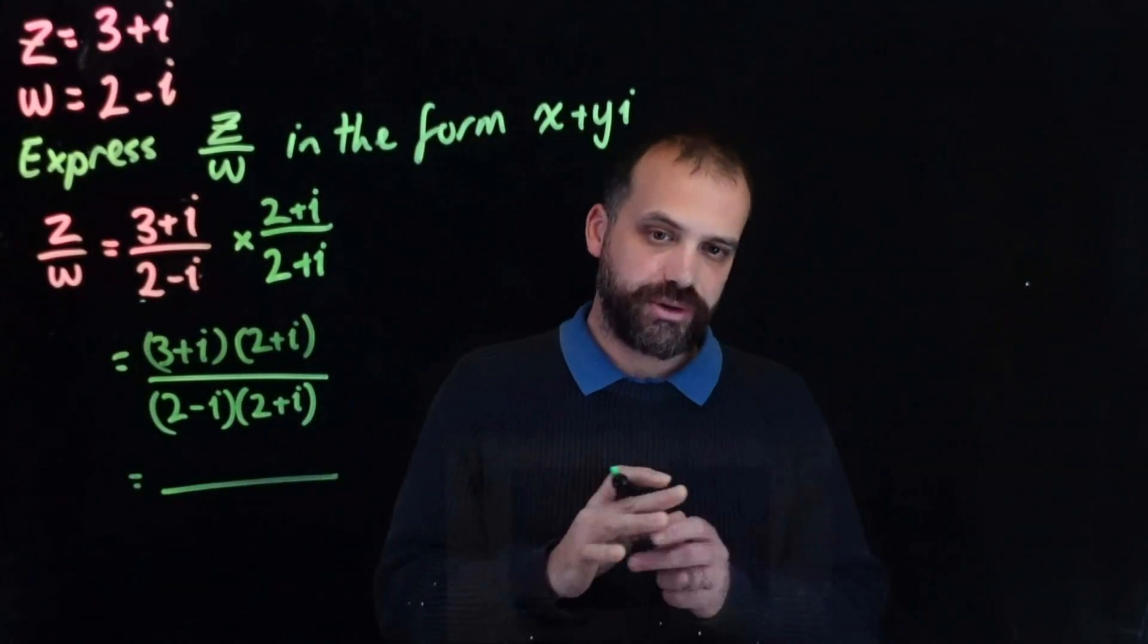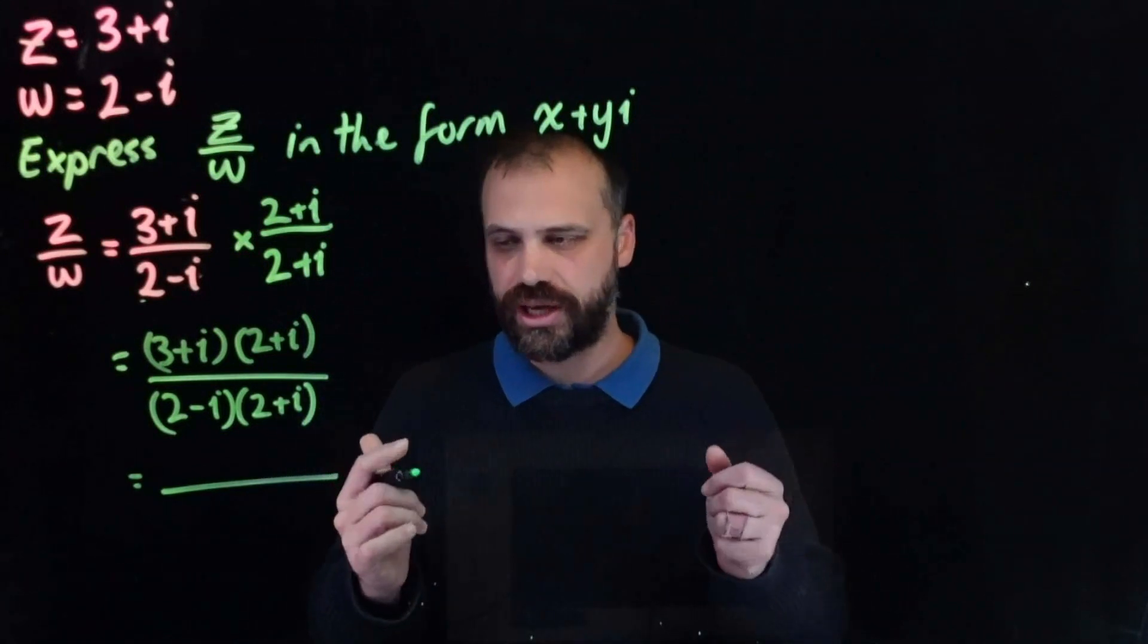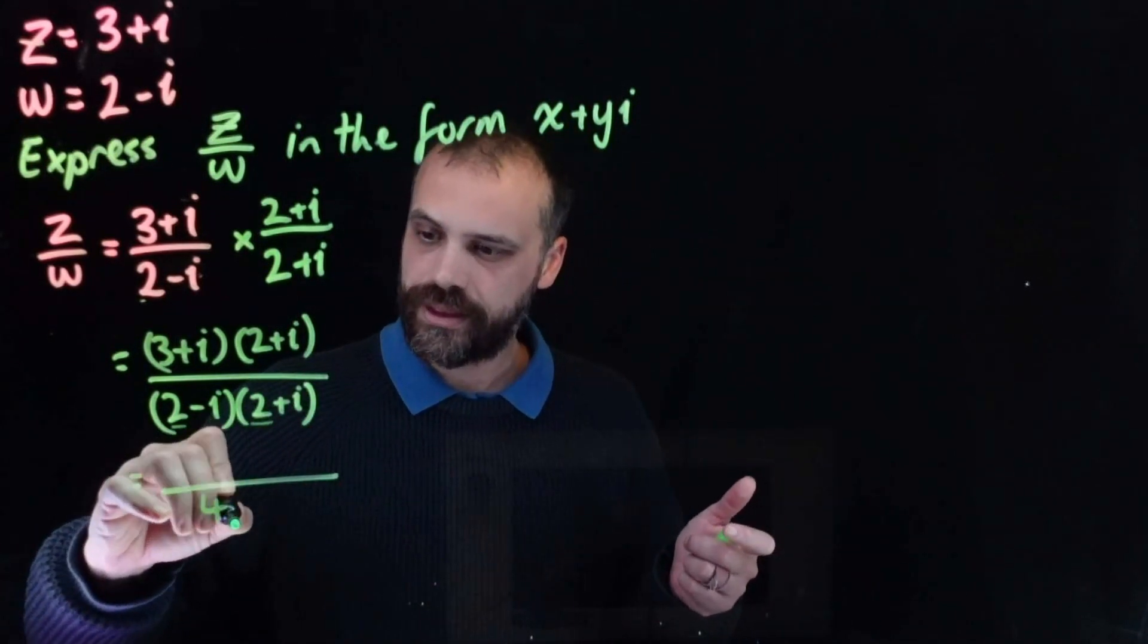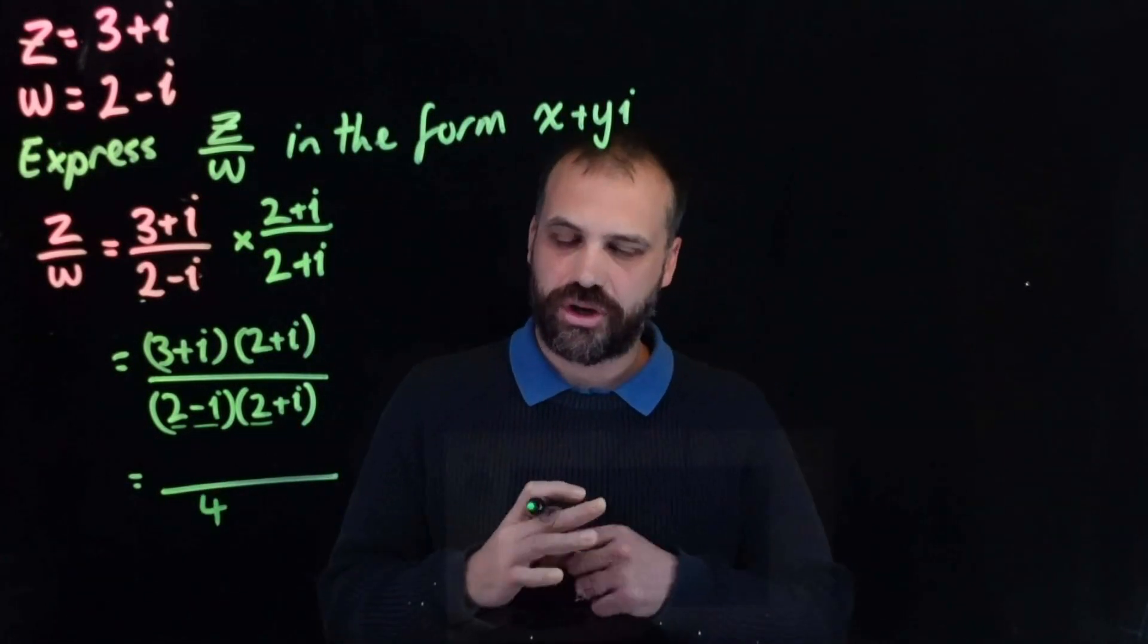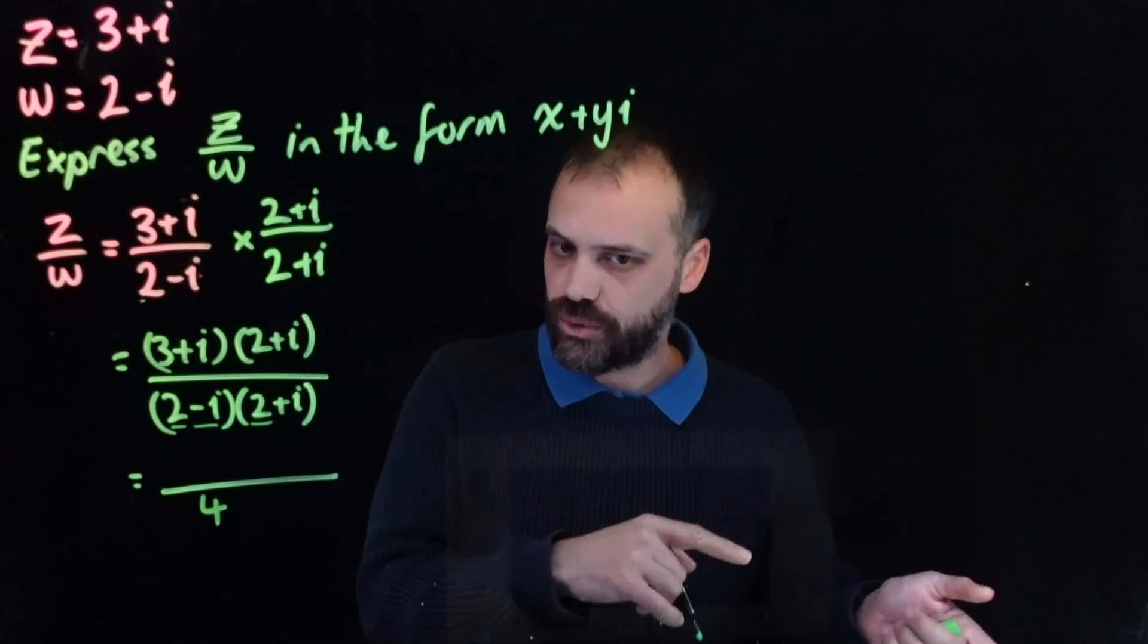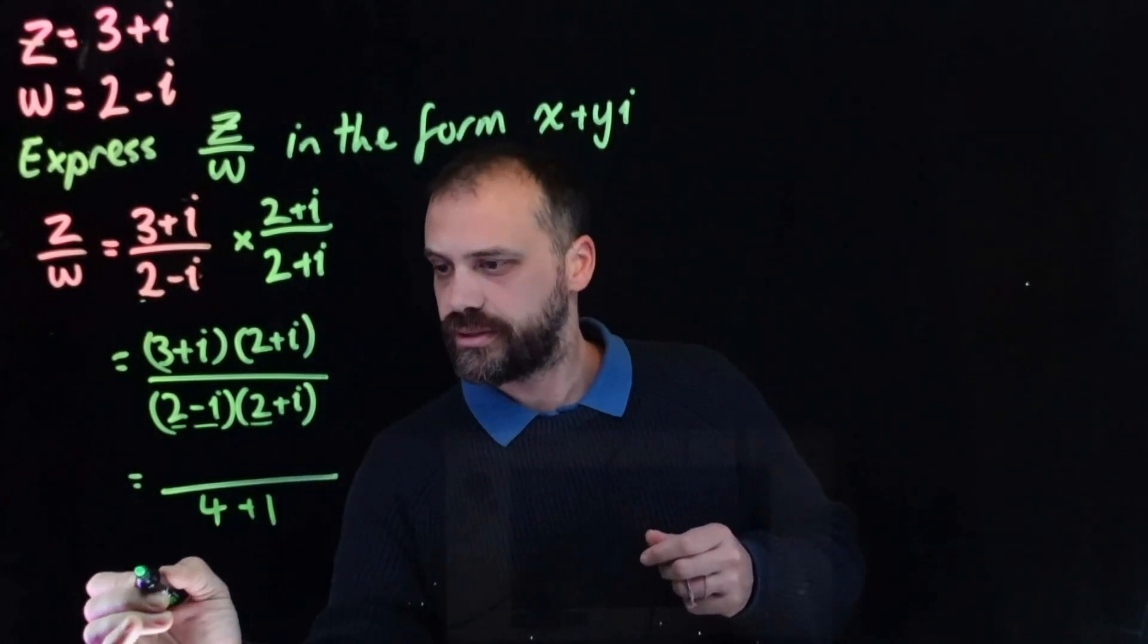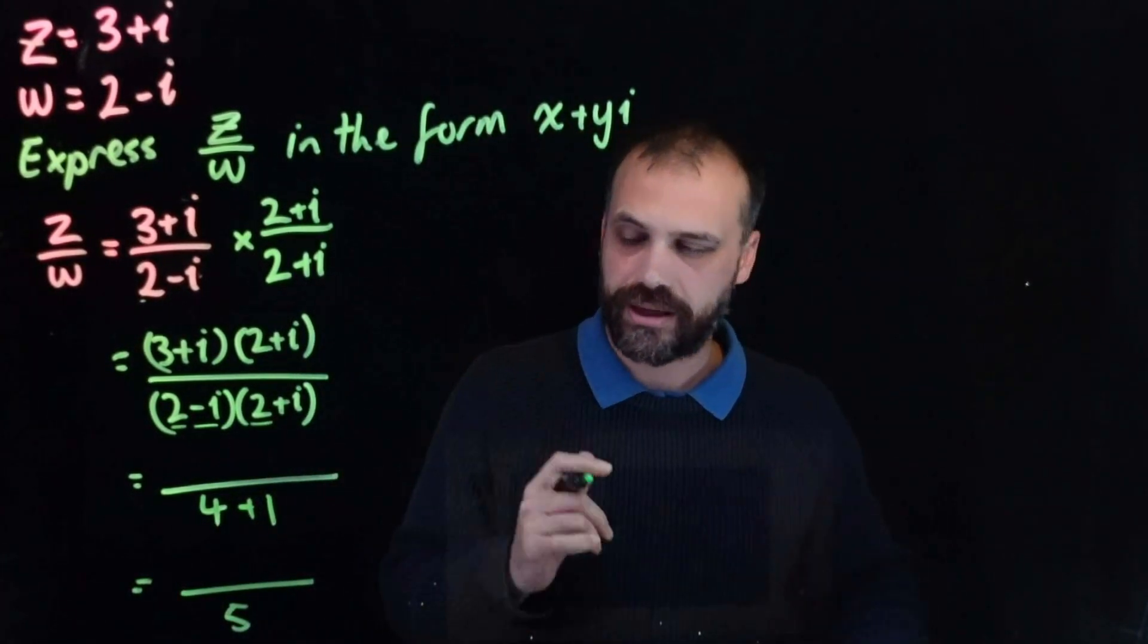Now, to me, the denominator on these is always easier than the numerator. They're very predictable. You know what's going to happen. It's this times this, so 2 squared, which is 4, and then this times this, negative i times positive i. That gives me negative i squared. i squared is negative 1, so negative negative 1 is positive 1. So in other words, my denominator is just 5.